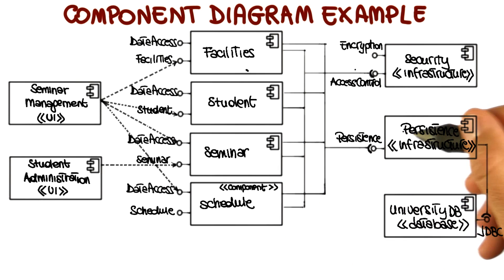And in turn, the persistent components relies on the university database component to provide such services. So there's the university DB components provide this kind of low level database services that are used by the persistence component to in turn provide its services.